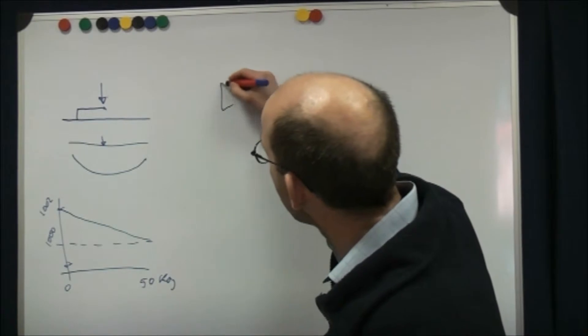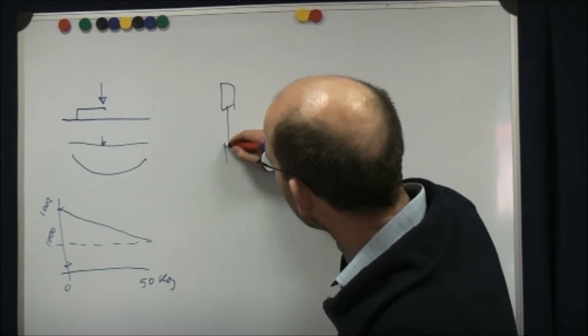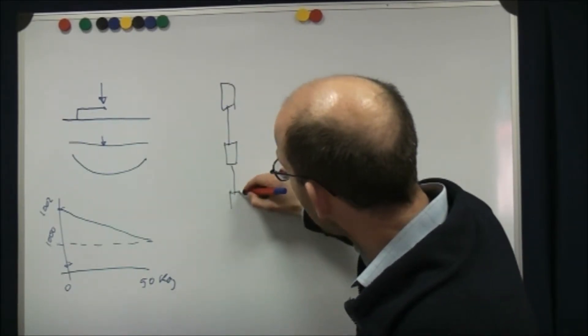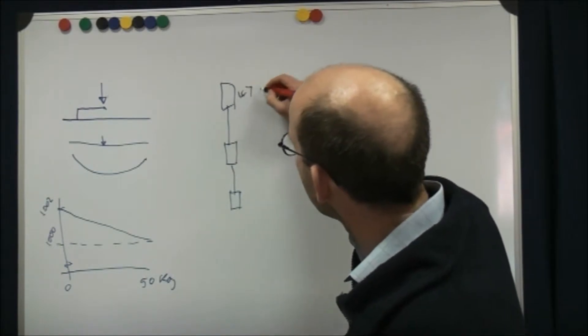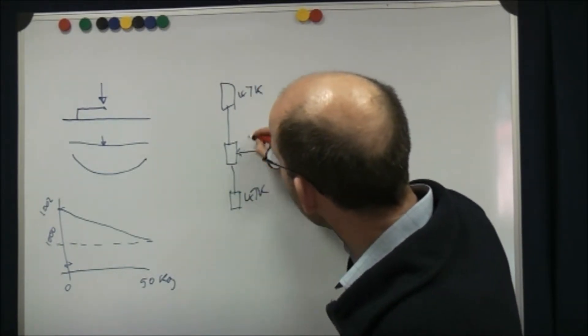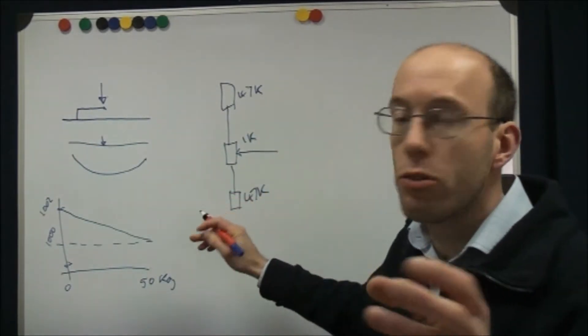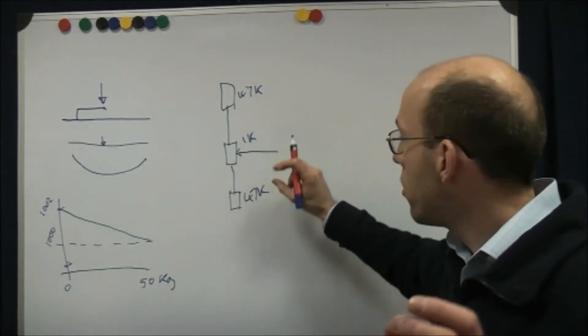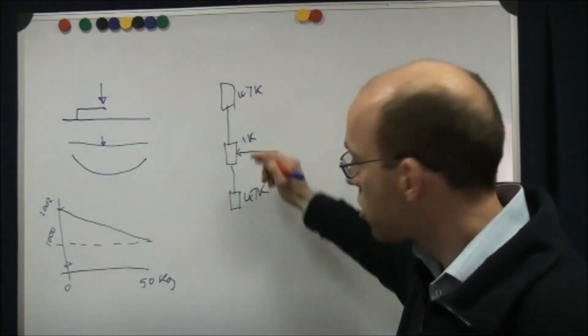So in terms of getting this to work, what we need to do is be able to set a center point for a comparator to look at. So we're going to use a 47k and another 47k and a 1k trimmer. And what the 1k trimmer will do for us is allow us to adjust to within 1% that center point.